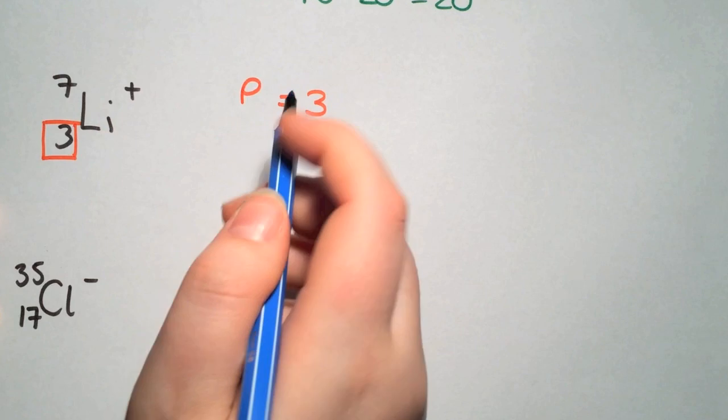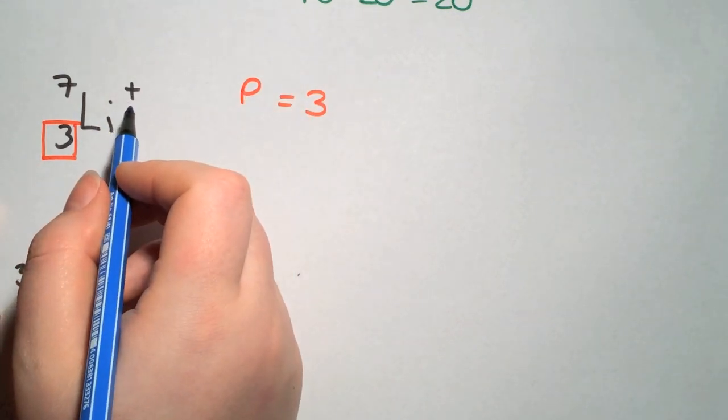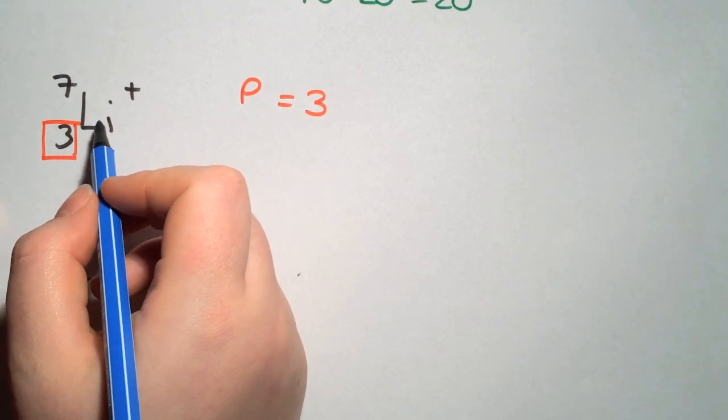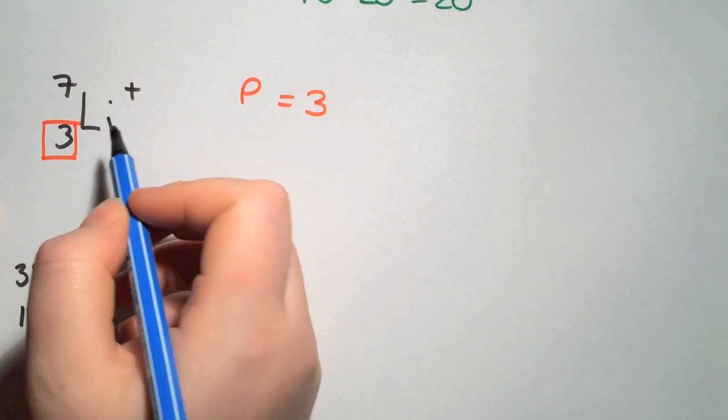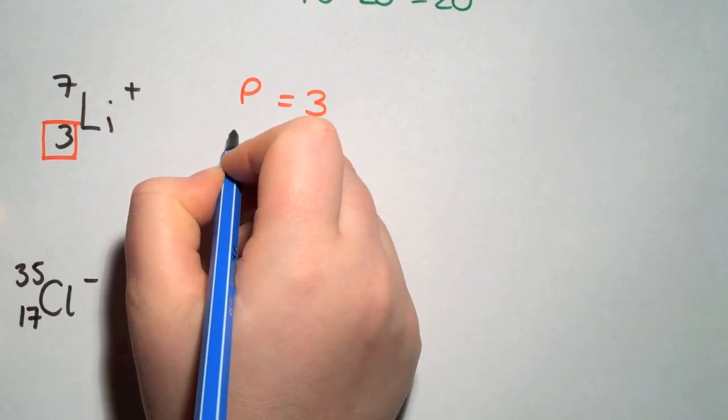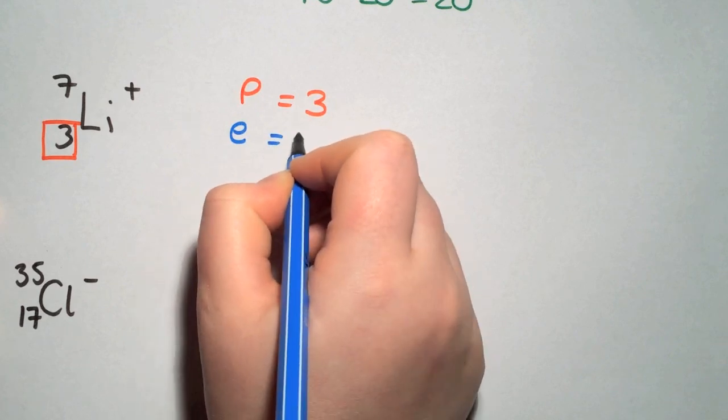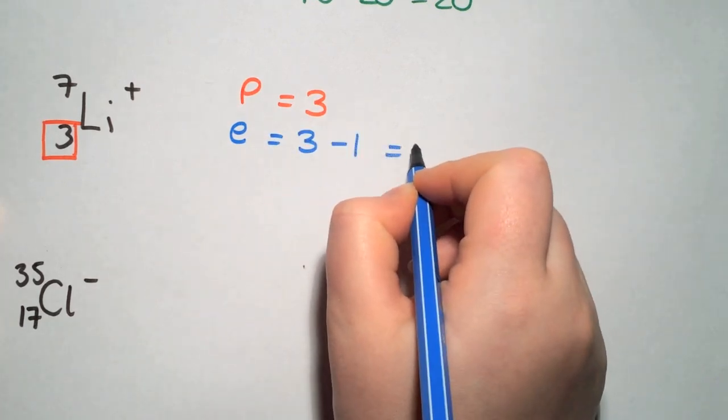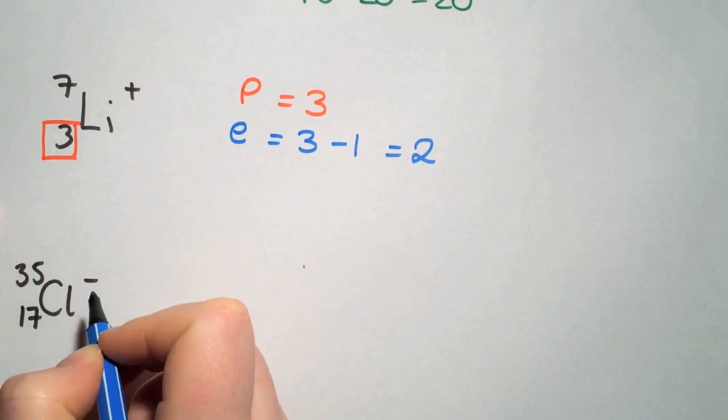For the electrons we have a positive charge. That means that this atom here has lost an electron. Electrons are negative species so when we lose them we become more positive. So the electrons will be 3 minus the one that it has lost to give you 2 electrons present.